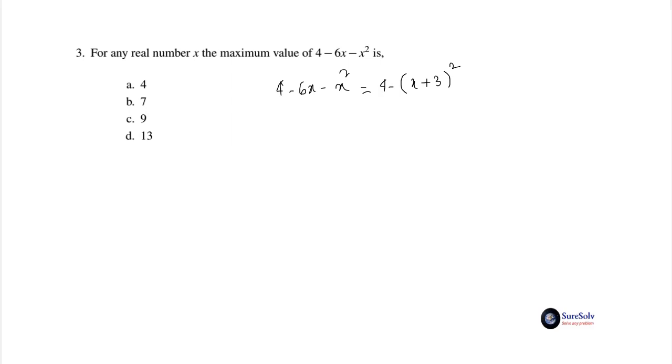But there is an extra third term 9 which becomes -9 outside the brackets. So we have to add plus 9 to compensate this minus 9 inside the brackets. This becomes equal to 13 - (x + 3)². The method is simple to follow.